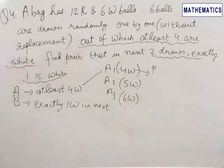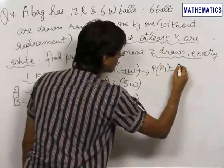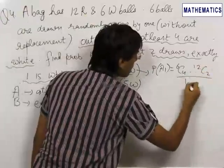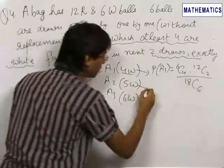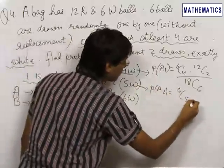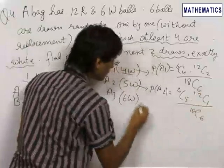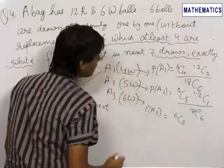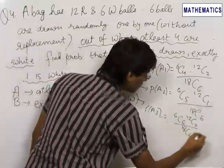The probability of A1: since there are 4 white balls, we select 4 from the 6 white and 2 from the remaining 12 red, divided by 18C6 (total ways to select 6 from 18). P(A2) = 6C5 × 12C1 / 18C6, selecting 5 white and 1 red. P(A3) = 6C6 × 12C0 / 18C6 = 1 / 18C6, selecting all 6 white balls.